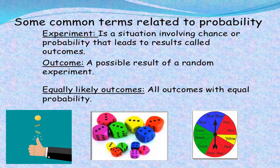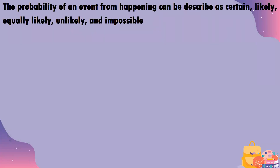The third term is equally likely outcome — all outcomes with equal probability. The best example is tossing a coin, where heads and tails have equal probability of outcome. The probability of an event can be described as certain, likely, equally likely, unlikely, and impossible. In some books, equally likely is written as even — they mean the same thing.